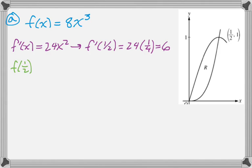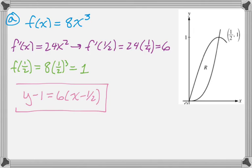We plug in 1/2 to the original function. That's 8 times 1/2 cubed, which is just 1. And then we use point-slope form. So y minus 1 equals 6, x minus 1/2, and that's all there is to part A.